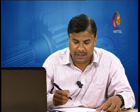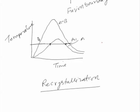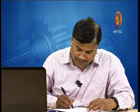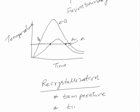On heating above the lower critical temperature, there will be a change in the grain structure of the material. The temperature above which new grains are formed is termed the recrystallization temperature. The formation of new grains due to thermal exposure is the recrystallization process. Time and temperature are the two important parameters that affect recrystallization because it is a diffusion-based mechanism.